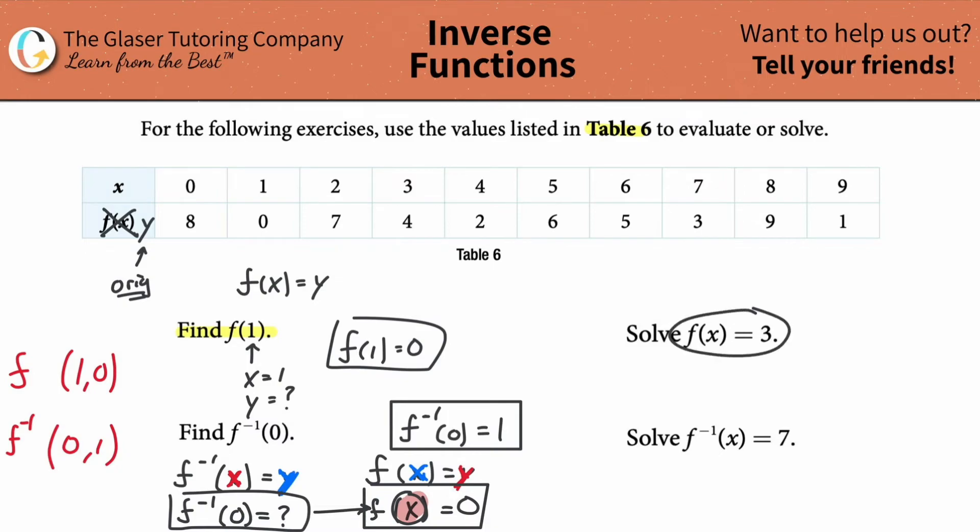Okay. So it says solve f of X is equal to three. In other words, the Y value here is equal to three and we got to find the X value. All right. So simply go to your table, find where Y is three. There it is. Right. And then what's the X value? Seven. So that's the answer. So f of seven is equal to three.